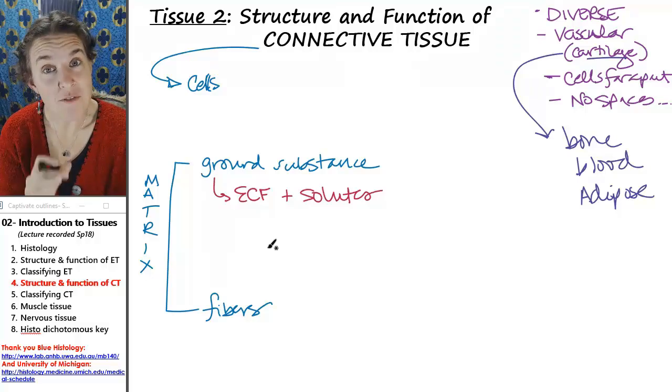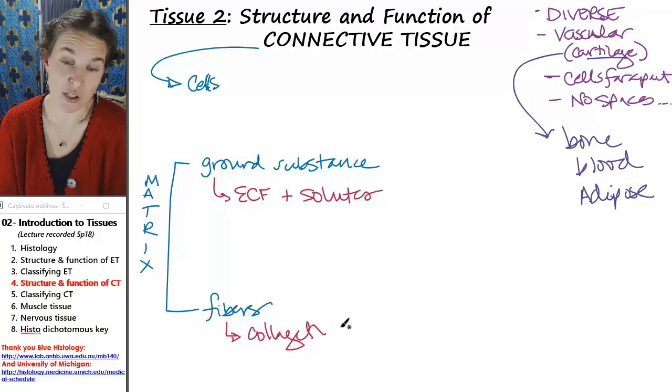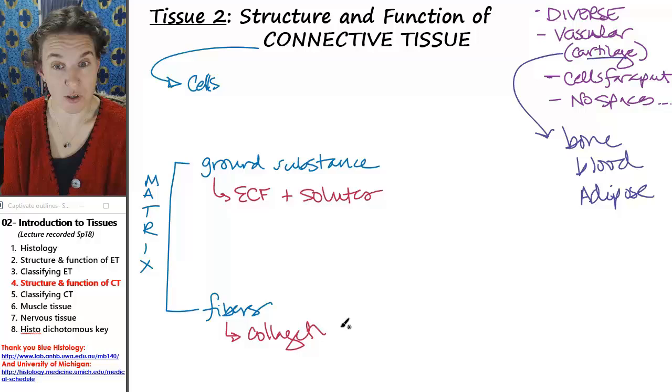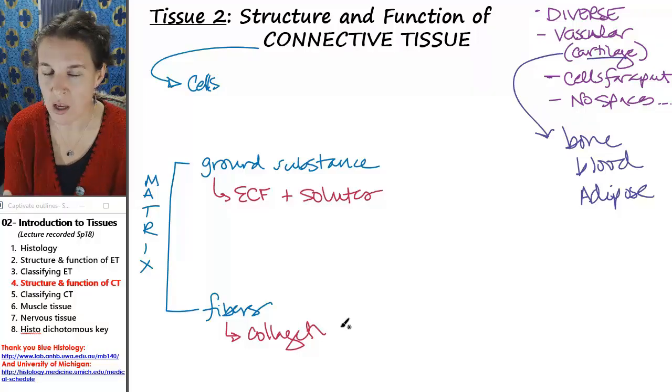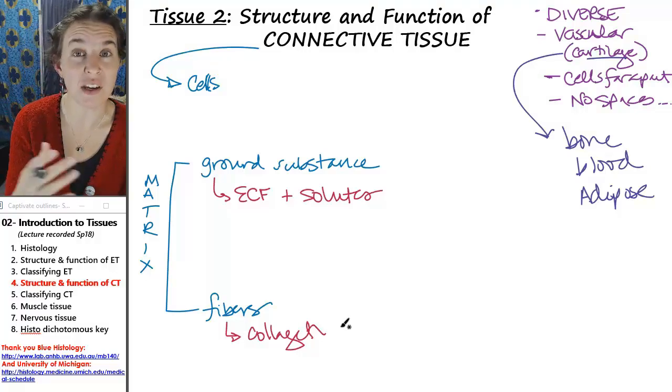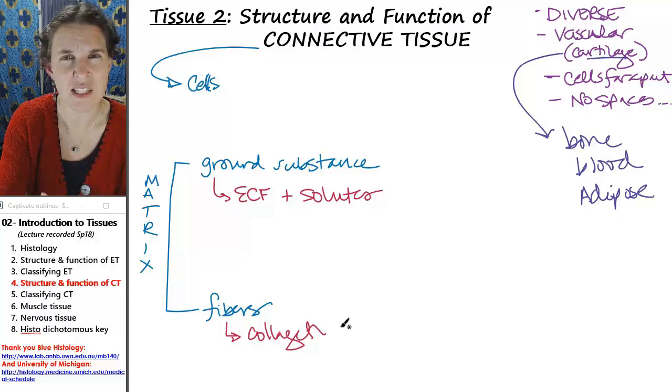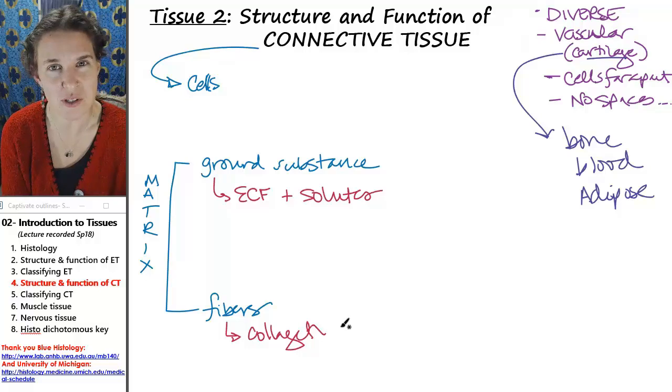Fibers are found running through that ground substance, and we actually have three different flavors of fibers that we're looking at. The biggest, actually truly the biggest fiber that you're going to look at is collagen. They're kind of thick. They're strong. The nature of the fibers is going to tell you the characteristics of the tissue.